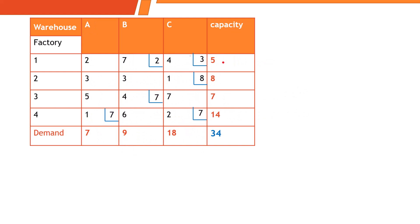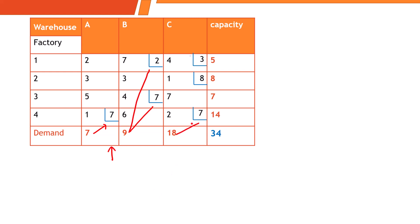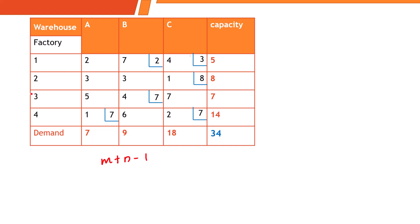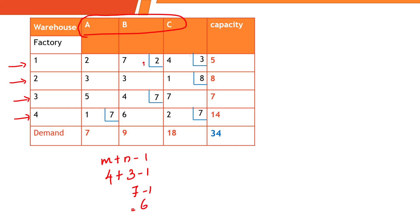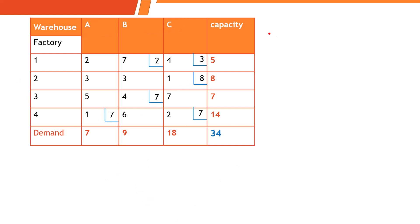Now verify: capacity for factory 1 is 2 + 3 = 5 ✓; factory 2 is 8 ✓; factory 3 is 7 + 7 = 14 ✓. For demand: warehouse A = 7 ✓, warehouse B = 7 + 2 = 9 ✓, warehouse C = 7 + 8 + 3 = 18 ✓. Also check the degeneracy condition m + n − 1: with 4 factories and 3 destinations, that is 4 + 3 − 1 = 6 allocations required, and we have exactly 6. Condition fulfilled.